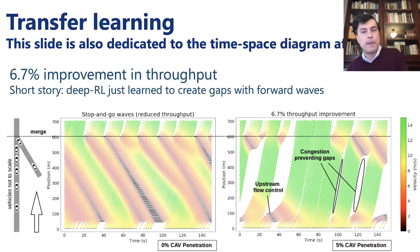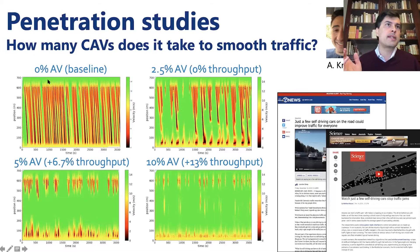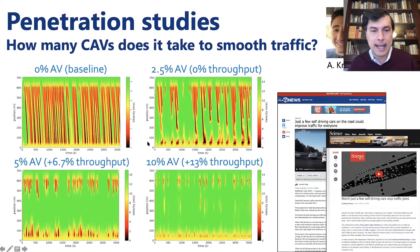This was one of the first instantiations done by two of my PhD students, Aboudi Kreidieh and Eugene Vinitsky. They started penetration studies asking: how many cars do you need to smooth traffic, and how much energy savings do you produce with that percentage? These were the first penetration studies we ran — obviously very idealized, simple merge scenarios — but it got attention and was even picked up by Science magazine.